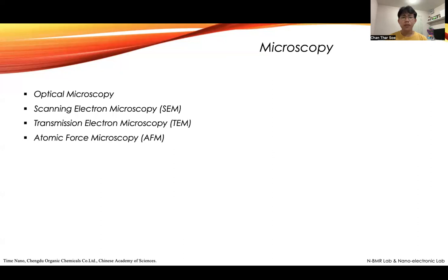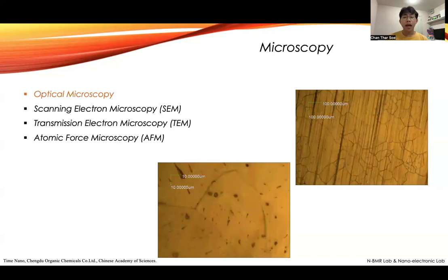There are many different microscopy techniques; here I give you a few examples. The first one is the optical microscope. The optical microscope simply uses light, and we see the image from the reflection off the surface of the sample. So this is the copper surface — that's what I was working on for my master's degree, using a copper substrate for growing graphene. Here this is just the copper substrate.